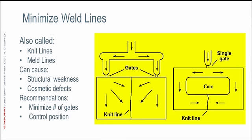Another cause of weld lines are core features — core pins and things like that. Even though I have a single gate, my plastic flow front has to come in, travel around the core, split up around the core, and come back together on the other side — that's going to cause a weld line. Why do we talk about weld lines? Because they may cause problems in your molded parts: structural weakness, and cosmetic defects. Usually when you have weld lines, you can see them in the surface of your part, which may or may not be a problem.